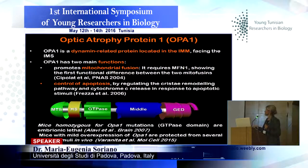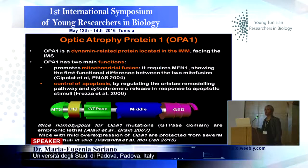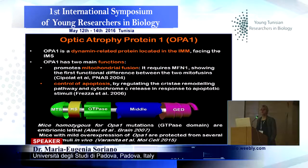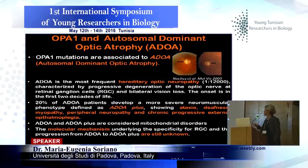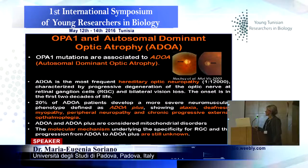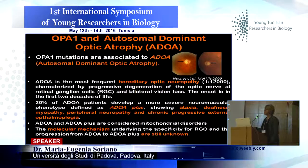The importance of OPA1 is shown by the fact that mice homozygous for OPA1 mutations are lethal, while mild overexpression of OPA1 protects mice from several damaging stimuli. OPA1 mutations induce autosomal dominant optic atrophy, which is the most frequent hereditary optic neuropathy, characterized by progressive degeneration of the optic nerve and retinal ganglion cells, with consequent loss of vision in the first two decades of life.